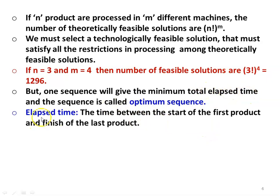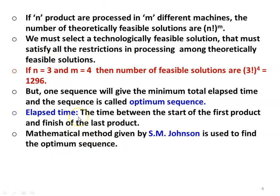Elapsed time is the time between the start of the first product and the finish of the last product — the time between beginning and end of the job. The mathematical method used to find the sequence is given by S.M. Johnson. There is no theoretical proof for Johnson's method; he developed it from experience by doing different types of sequences and identified a mathematical methodology to solve sequencing problems. In this model, N jobs are operated on M machines or allotted to M workers.